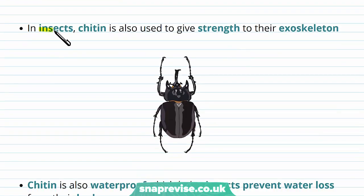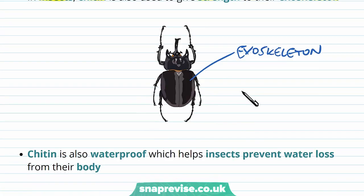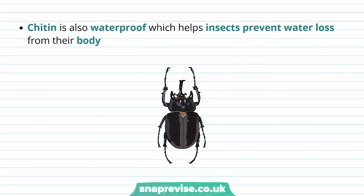In insects, chitin is used in a slightly different way — it gives strength to their exoskeleton. With most insects like beetles, instead of having an inner skeleton like we do, they have an outer casing known as an exoskeleton. It's a tough structural skeleton which covers the entire body, giving protection. We also find that chitin as a molecule is waterproof.